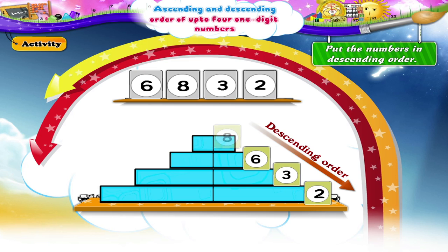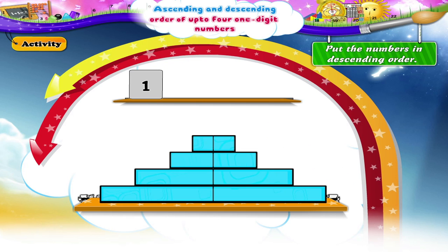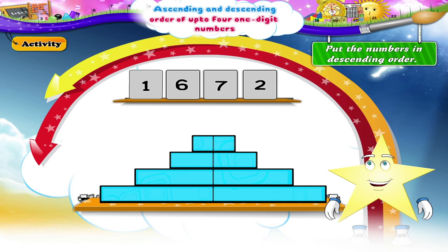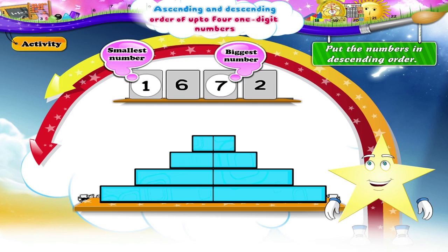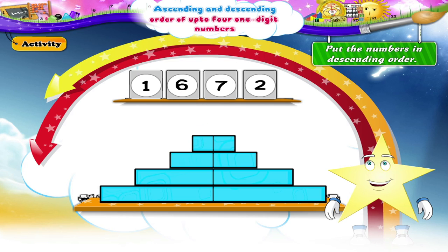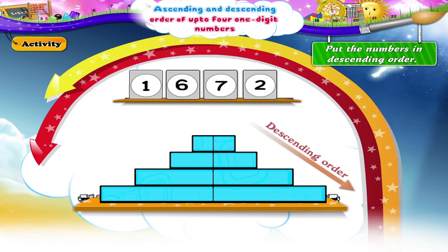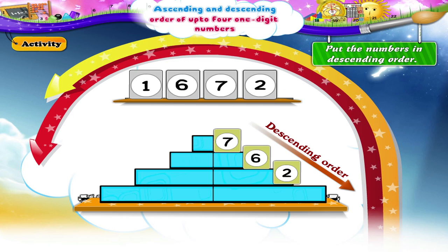Finally, the numbers one, six, seven, two. The biggest number is seven. The smallest number is one. Between six and two, six is the bigger number. The numbers arranged in descending order are seven, six, two, one.